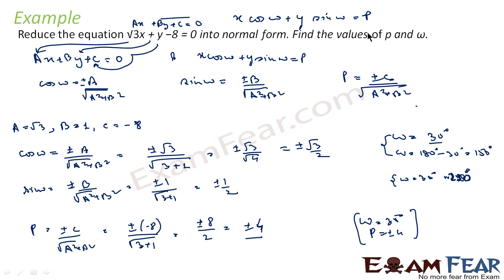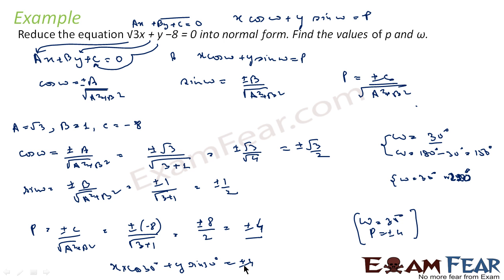We can now write the equation. The normal form equation is x cos 30° + y sin 30° = ±4. We have two equations: one with +4 and one with −4. Substituting the values of cos 30° and sin 30° gives the final answer.